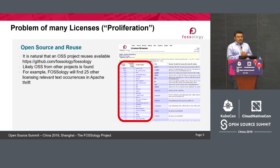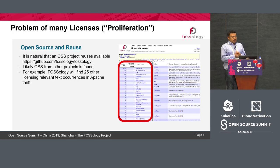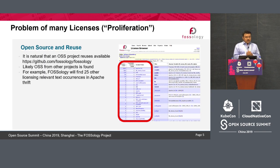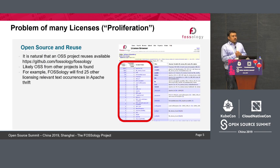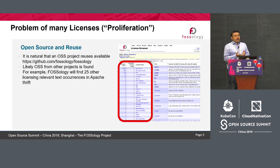This is an example of Apache Thrift. Apache Thrift is licensed under Apache 2.0. Though Apache is a very homogeneous license, if you scan Apache Thrift with FOSSology it will give you 25 odd licenses. That means there are another 25 licenses inside the Apache Thrift package.